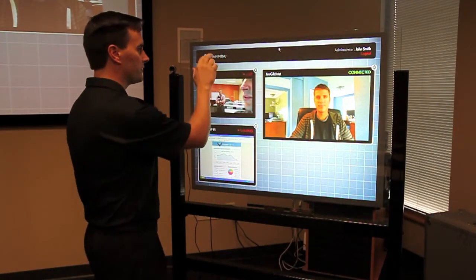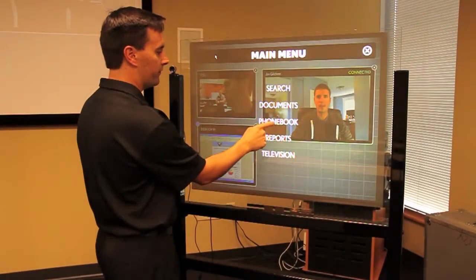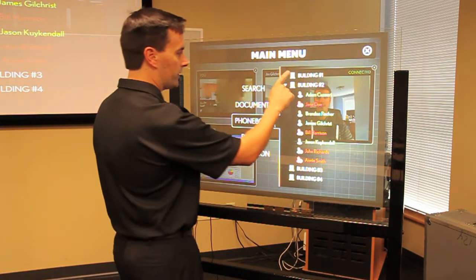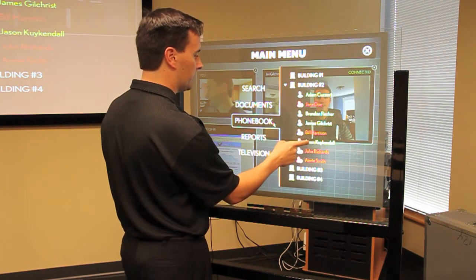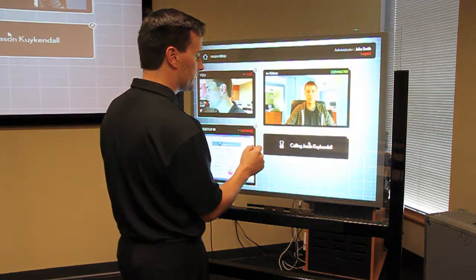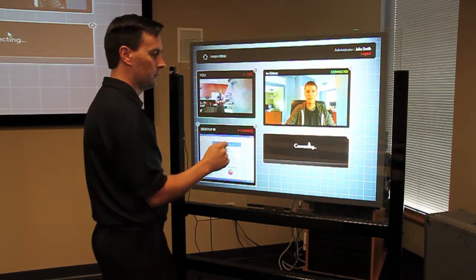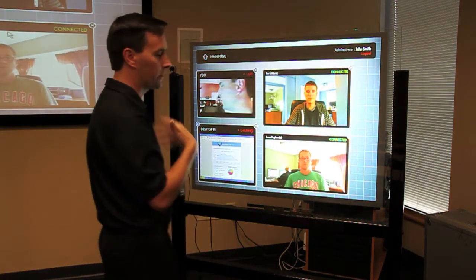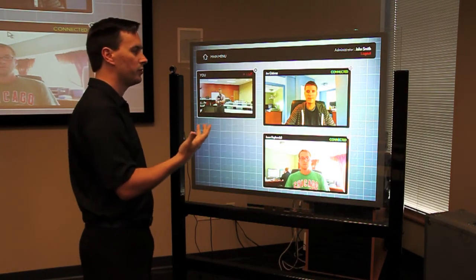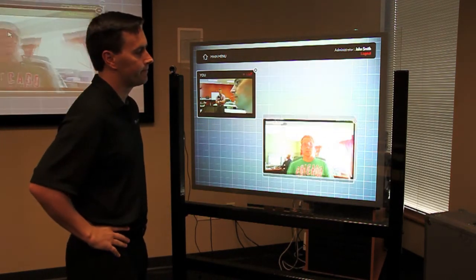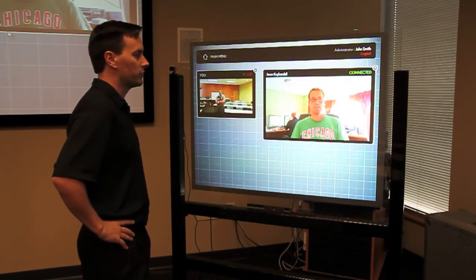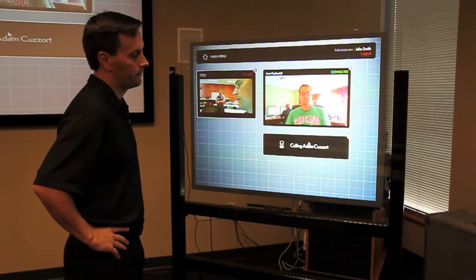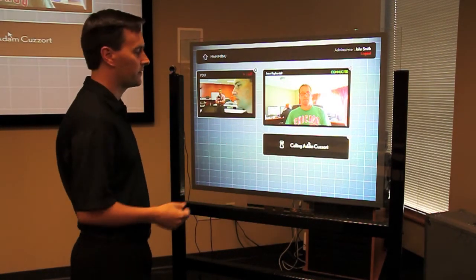With the video conferencing piece, we can go here to our phone book, and we can see who's online here. If we wanted to conference somebody else in, we could just tap Jason here. Connect him. Now, we can also use voice commands. So if I wanted to say, computer, disconnect Jim. Computer, call Adam Cazor. So, you see how that works.